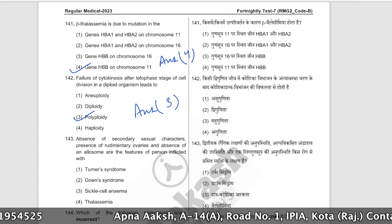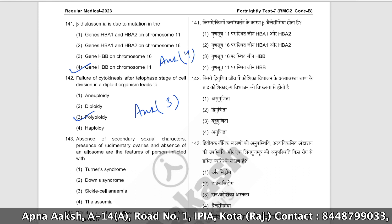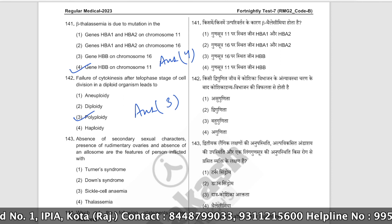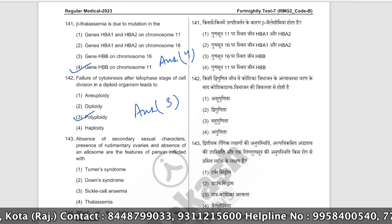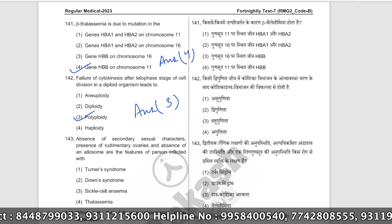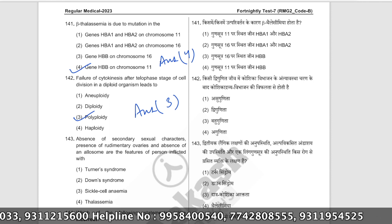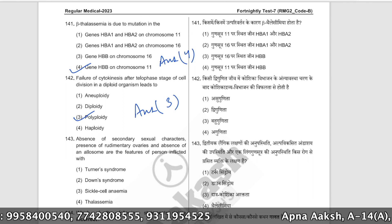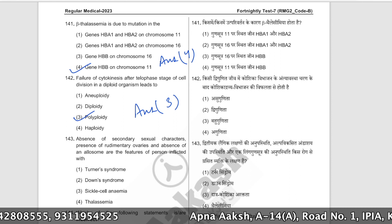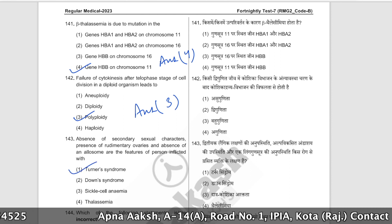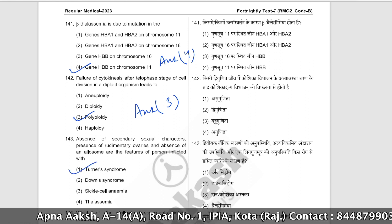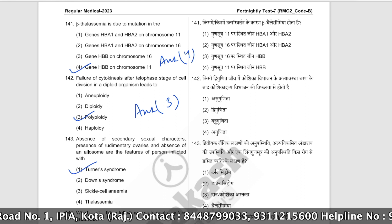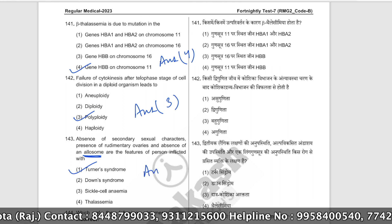Absence of secondary sexual characters, presence of rudimentary ovaries, and absence of an allosome (sex chromosome) are features of which condition? These are features of Turner syndrome, where only one X chromosome is present (XO). The correct answer is option number one.